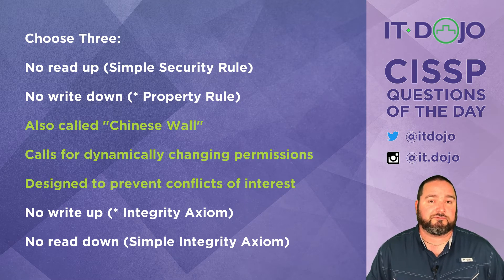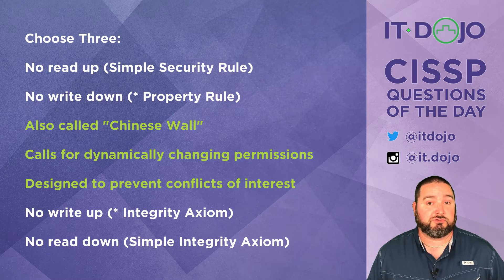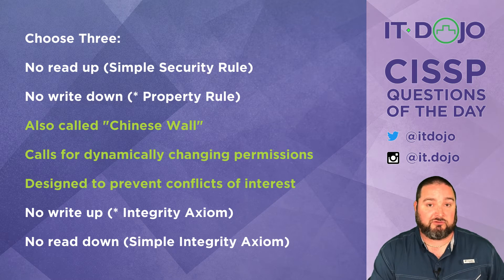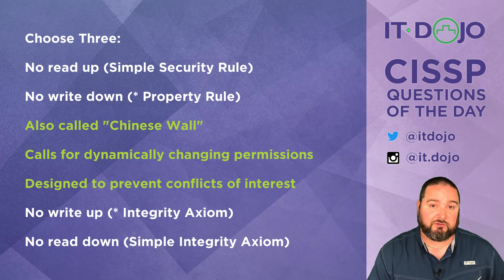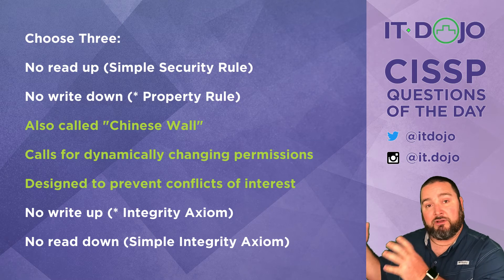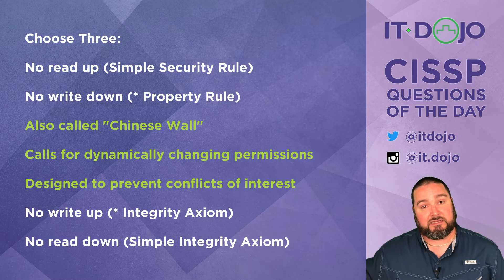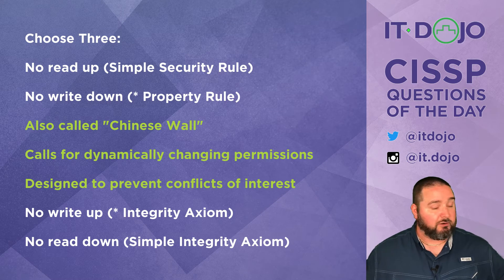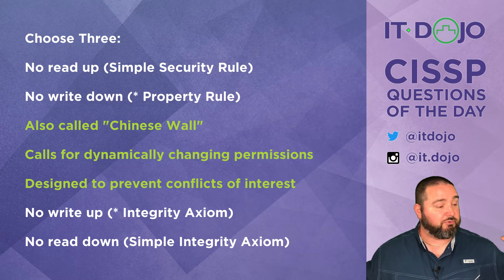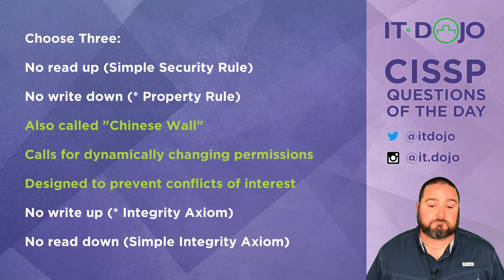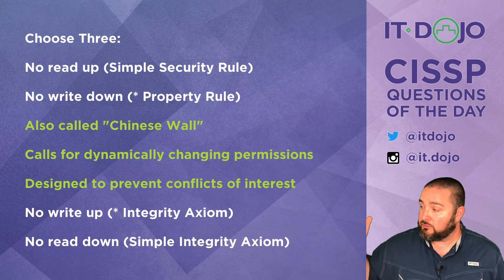Another component of the Chinese Wall is preventing data from leaking through collusion between different users. If you're allowed to view information in company data set one — Bank of America — then you're not allowed to view information in company data set two — Citibank — because they're in the same conflict of interest class. However, you might still be allowed to view information in a different conflict of interest class, say Tech Company A, since that's a separate class.